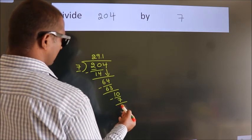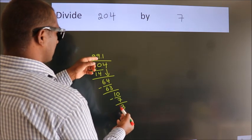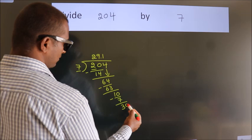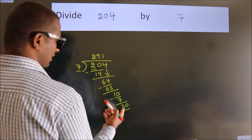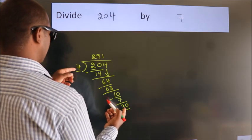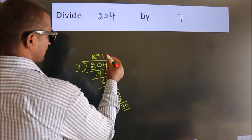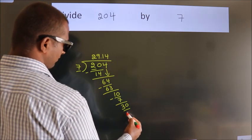After this, we already have the decimal, so directly take 0. So 30. A number close to 30 in the 7 table is 7 fours, 28.